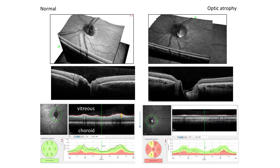In this slide, the left side shows a normal eye, the right side shows an eye with optic atrophy, and the quantitative data generated is on the bottom row, where the graph represents RNFL thickness along a circular path around the edge of the optic disc, which is indicated by the green circle on the middle row.